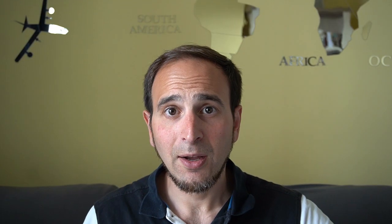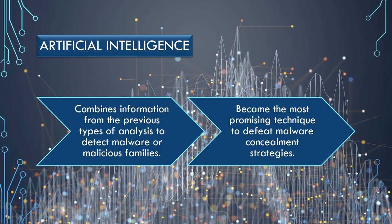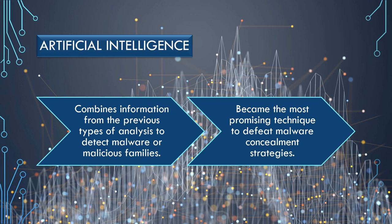One of the things that became very popular in the last few years was using artificial intelligence — and this is the main point of the arms race. AI systems were a breakthrough when analyzing malware. They use all of the previous techniques — data from static analysis, dynamic analysis, and binary analysis — and train machine learning algorithms to predict whether a piece of software is malware or not.